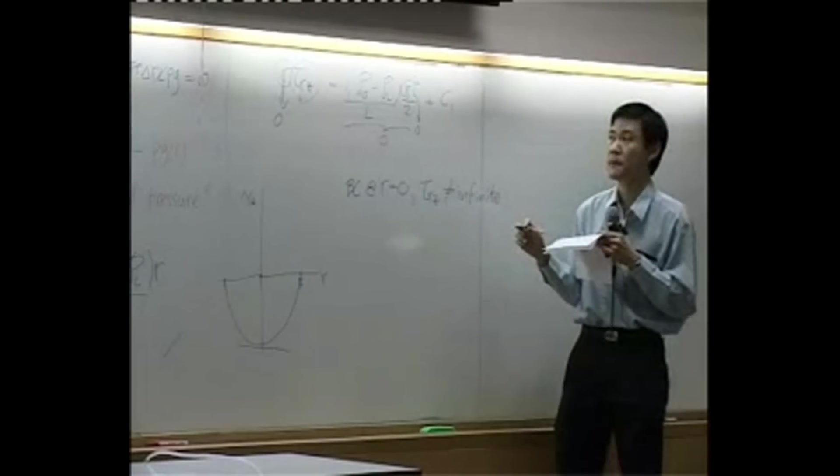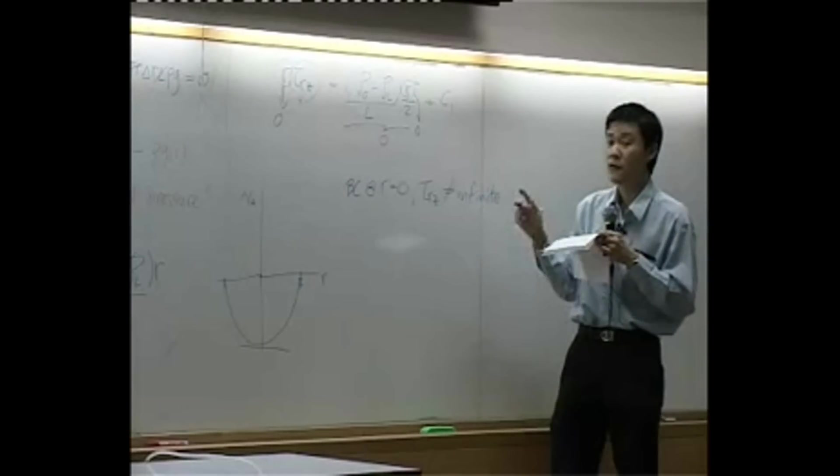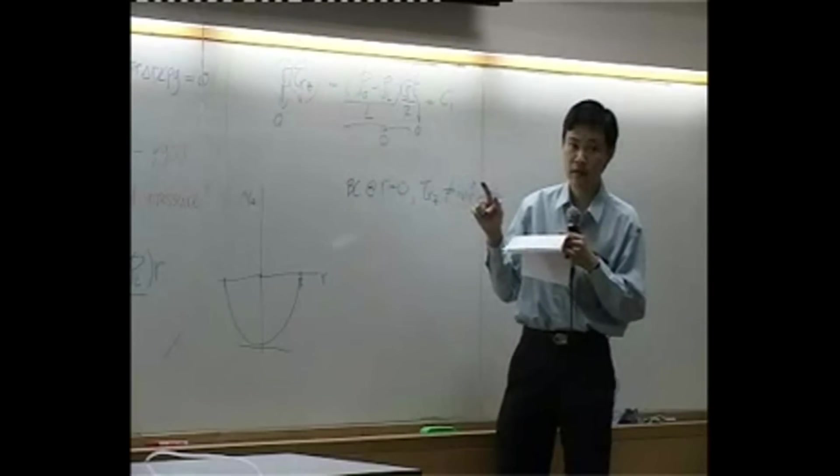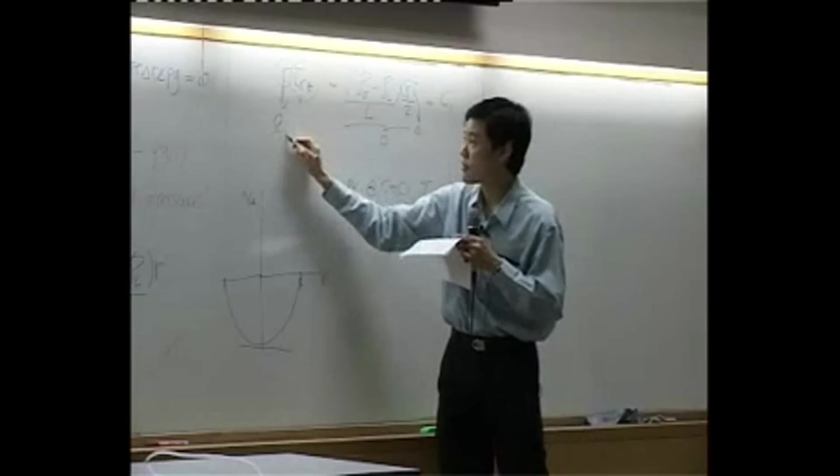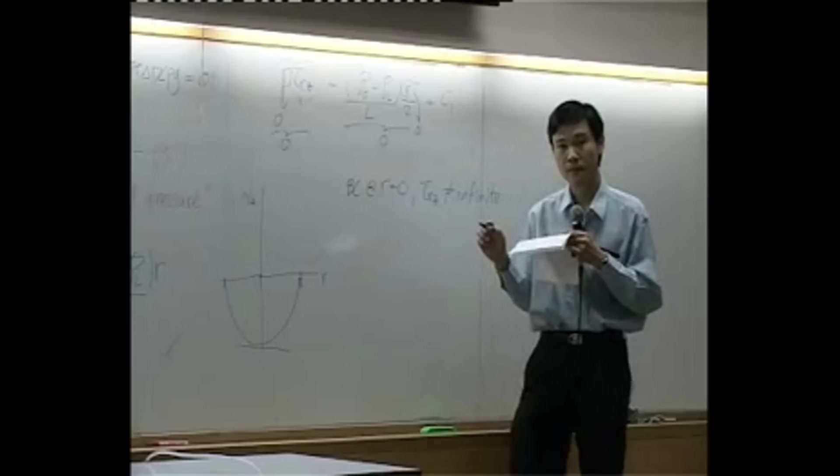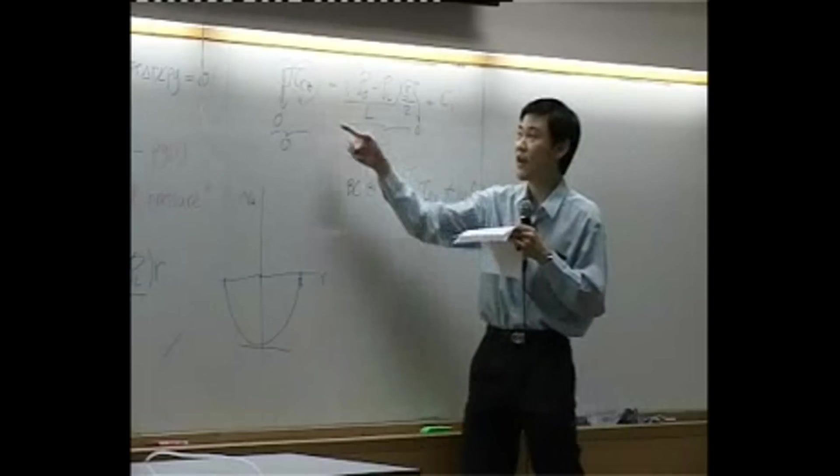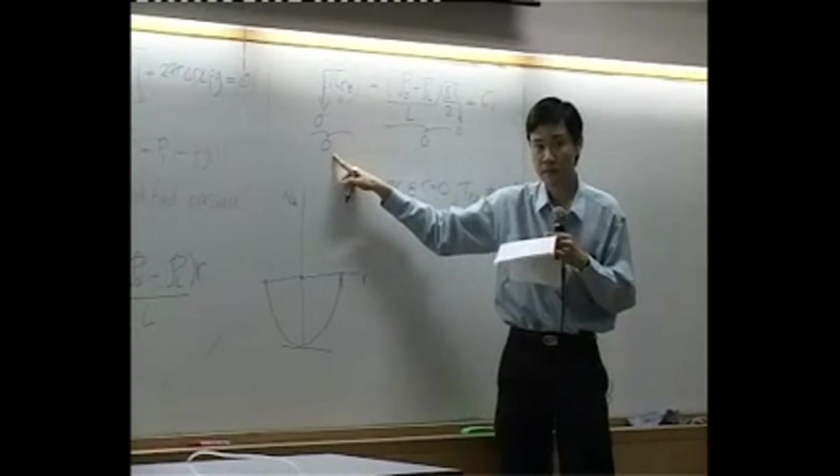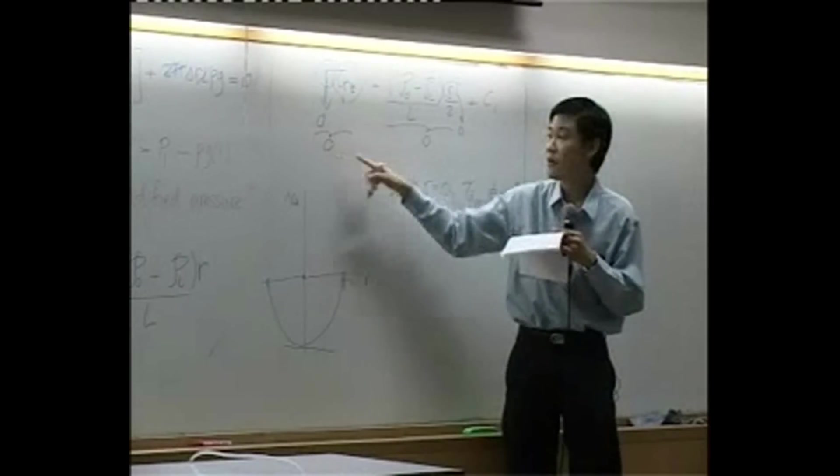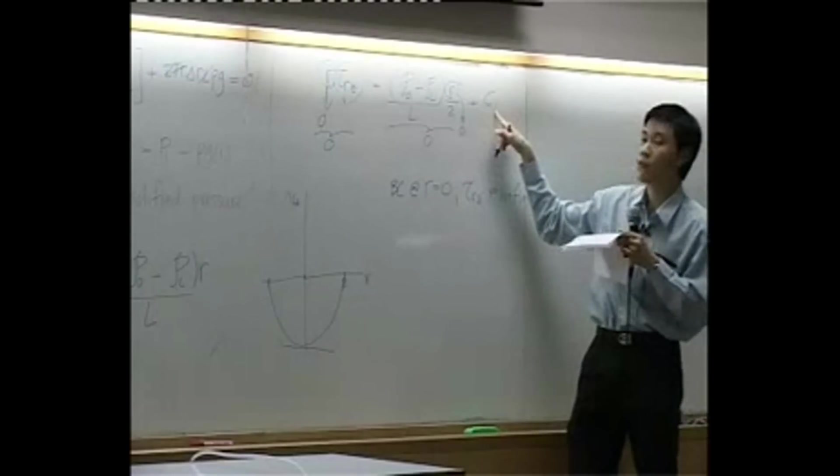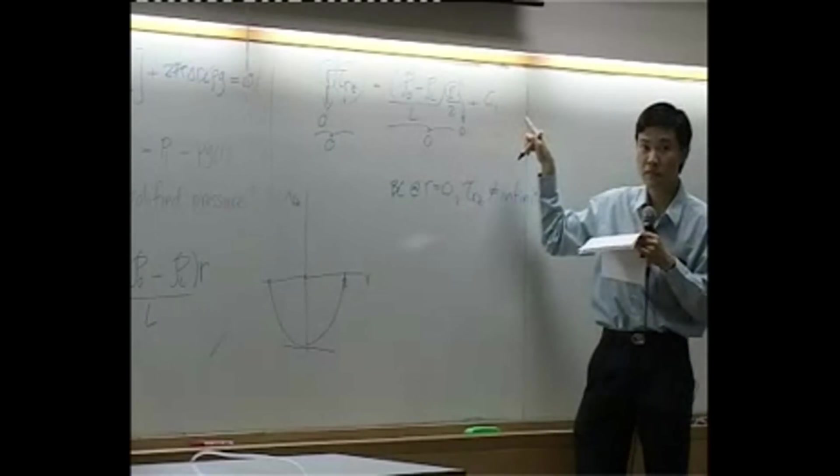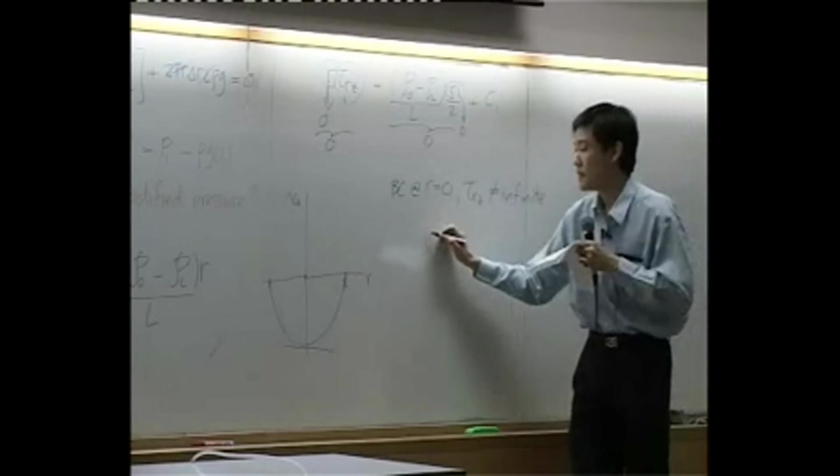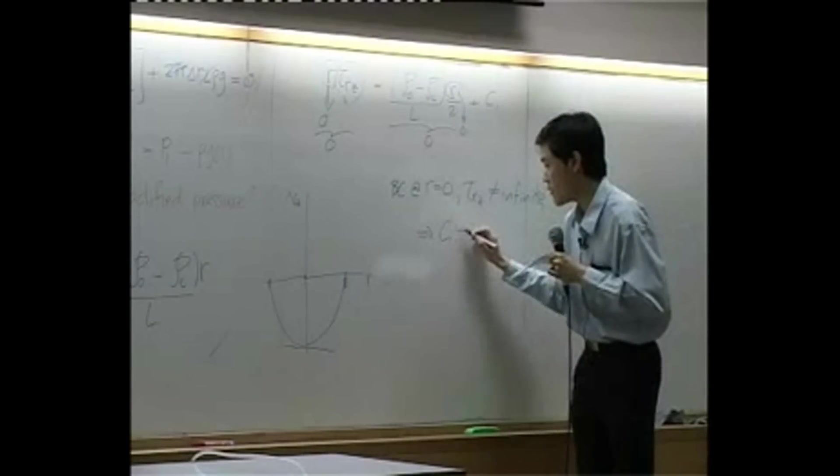At r equals to zero. Now we know that tau Rz can never be infinite, so this term combined must be zero. Because as long as this term is not infinite, anything multiplied by zero you get zero. By under this assumption, you can solve right away that C1 is zero.